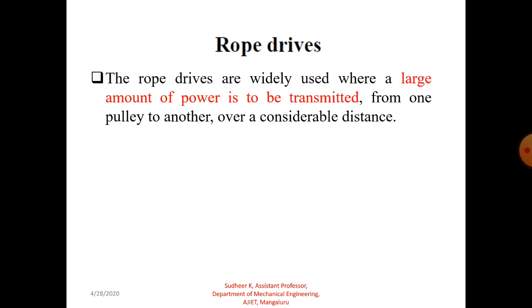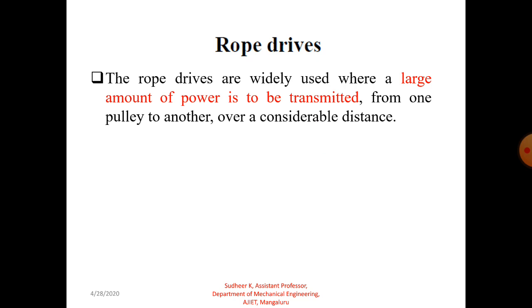Coming to rope drive — we have already studied one important drive, that is belt drive. We have some advantages of belt, but also some limitations. One main limitation is that the power transmitted by flat belt drive is moderate, and it can only be transmitted for a limited distance, about eight meters. So for greater distances, the best option is always rope drive. Rope drives are widely used where a large amount of power is to be transmitted from one pulley to another pulley over a considerable distance — more than eight meters — and we can transmit power effectively with rope drive.